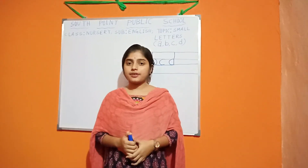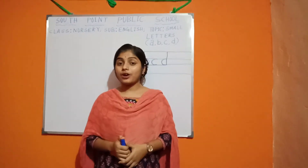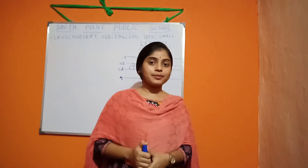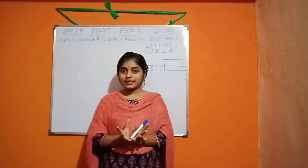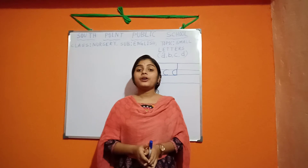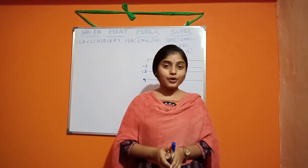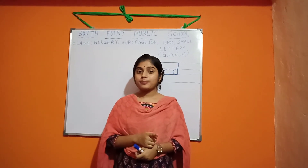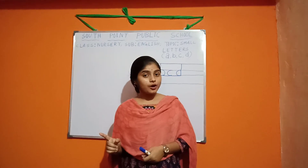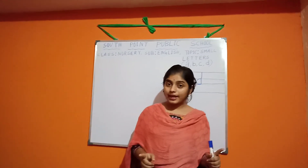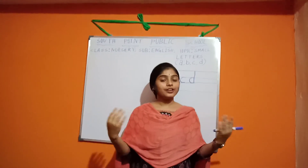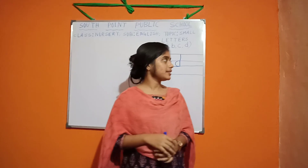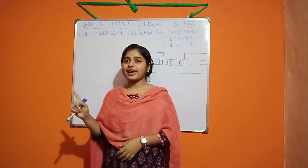Students, A for apple — we already learned about these. A for apple, B for ball, C for cat, and D for doll. A for Apple, B for Ball, C for Cat and D for Doll. Today we discussed about the small letters A, B, C and D.